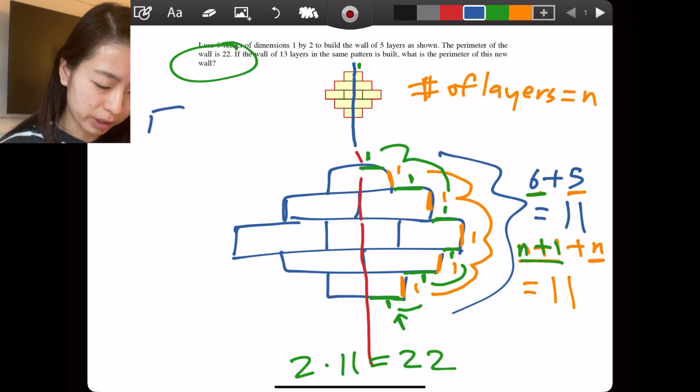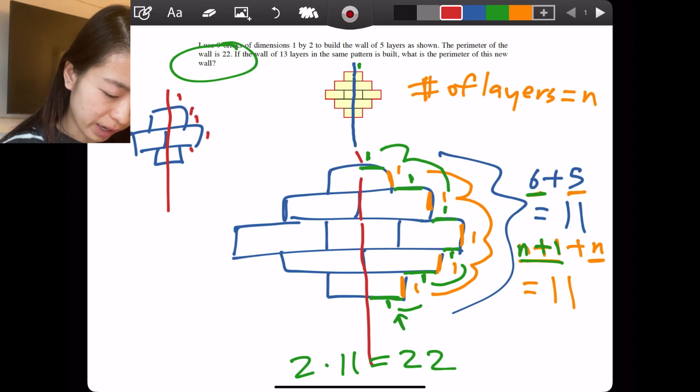But let's just confirm it for a layer of three bricks. So here, if we count it, we have one, two, three, four, five, six, seven on one side.